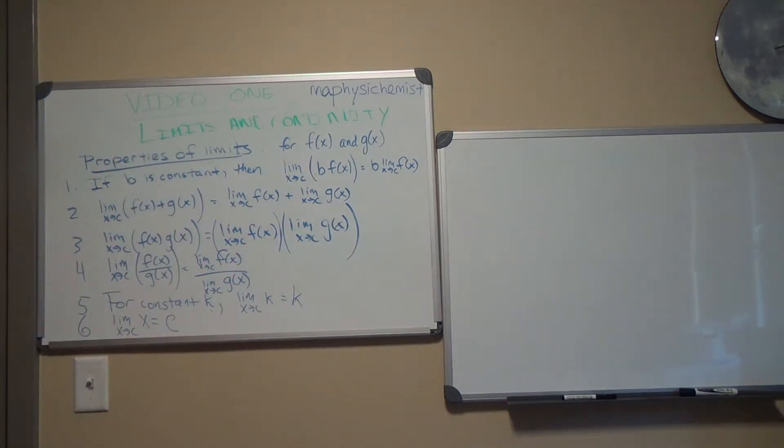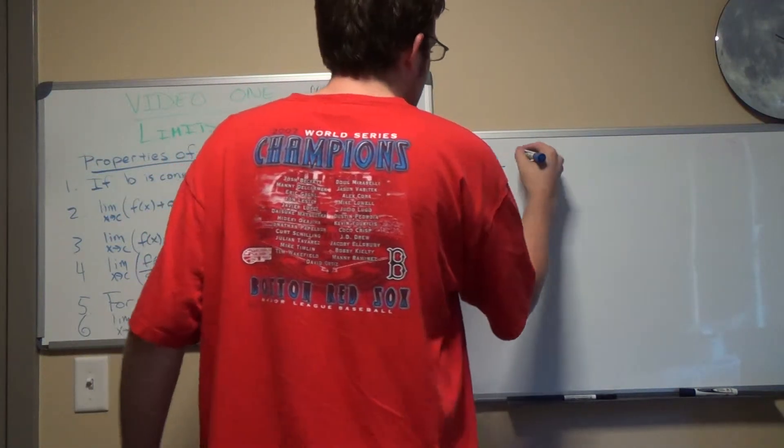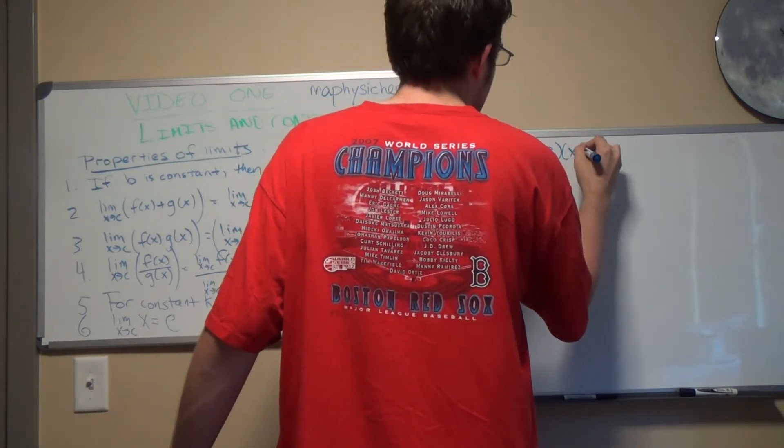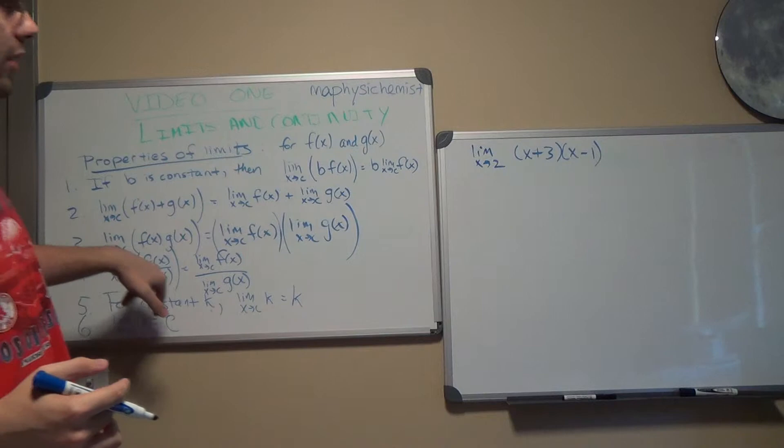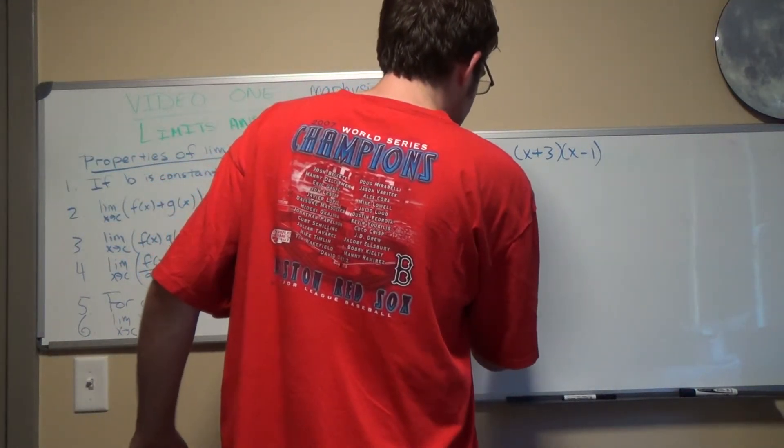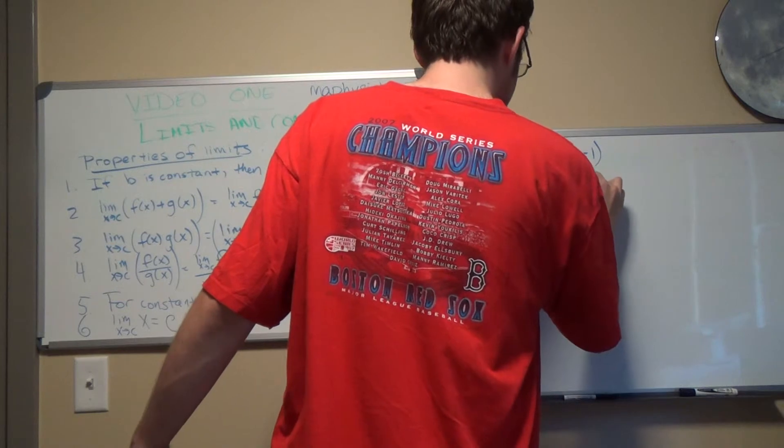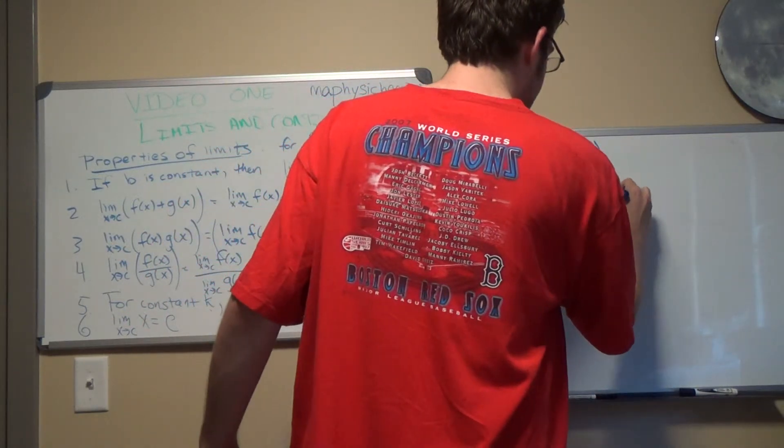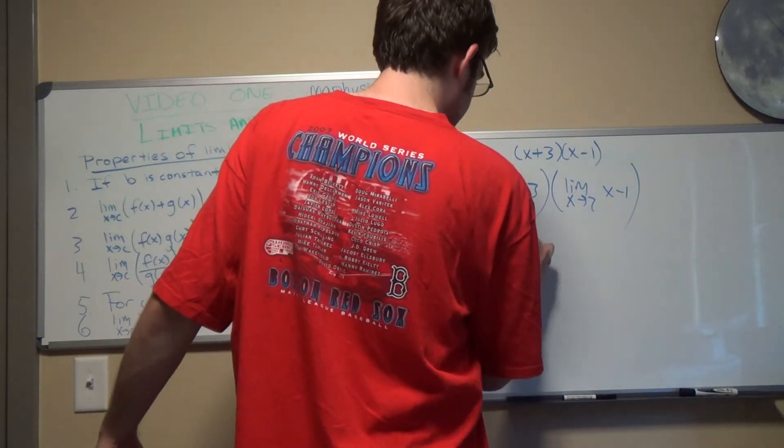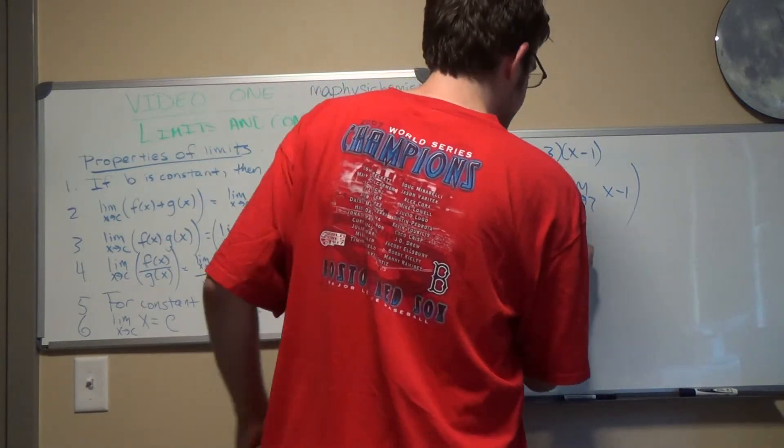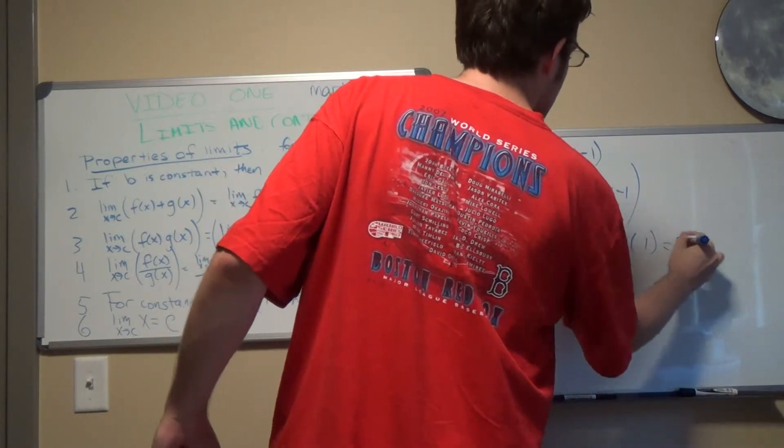So let's try to use one of these properties. Let's say limit as x approaches 2 of x plus 3 x minus 1. Let's try this one. So using limit property 3, we can do limit as x approaches 2 of x plus 3 parentheses. Limit as x approaches 2 of x minus 1 parentheses. That's the same thing. Limit as x approaches 2 is 2 plus 3 times 2 minus 1. 2 plus 3 is 5 times 2 minus 1 is 1. So that limit is 5.